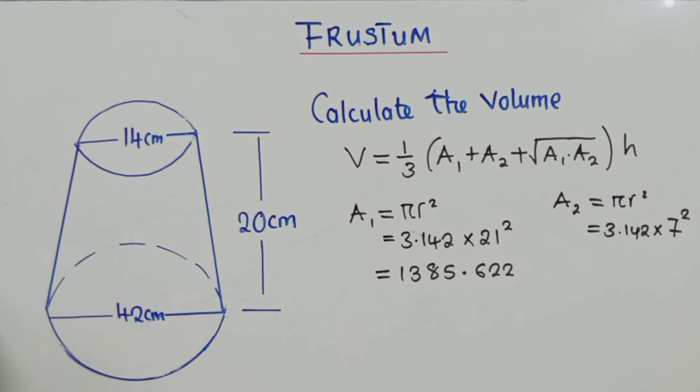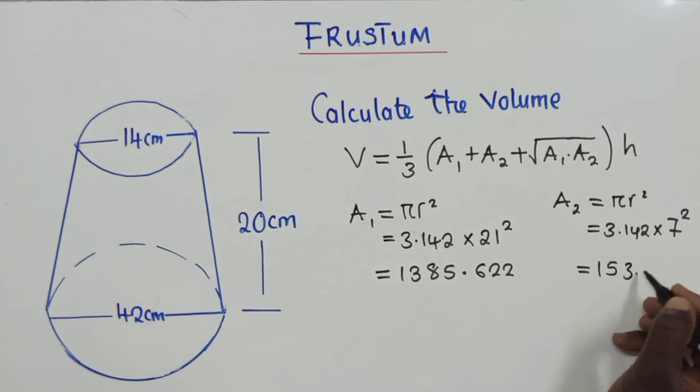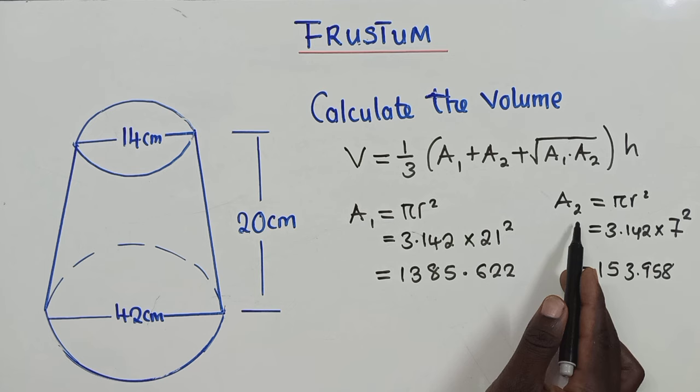And our area 2 will be the area on top here. So we'll do the same here, pi r squared. What is our pi? It's what I've written here. And our r is 7 squared, the radius of the top circle. So when we solve, our answer will just be 153.958.